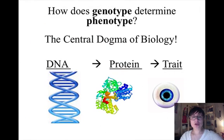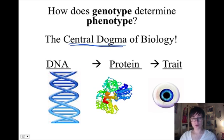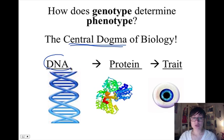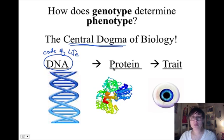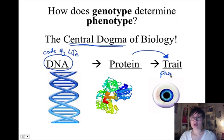Let's talk about how genotypes determine phenotypes. Here's the central dogma. All of the information that controls who I'm going to be and who you're going to be is found in our DNA. Our DNA is basically the code of life — whatever my body can make is ultimately determined by this instruction manual, and we're all going to have different instruction manuals. We need to take this DNA and use the information to make a protein. The protein we make is what we end up actually seeing — our traits.